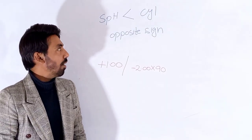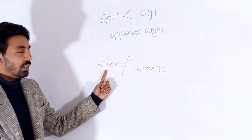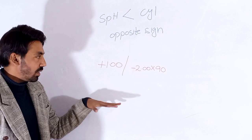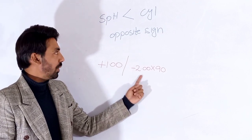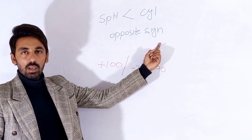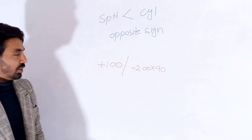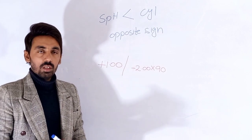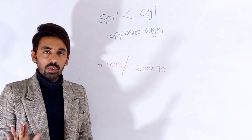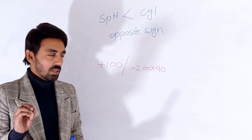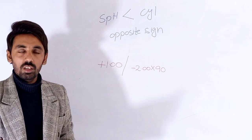In the final example, the spherical correction is lesser than the cylindrical correction with the opposite sign. In this condition, there is no need to transpose the prescription. This prescription is simply mixed astigmatism.